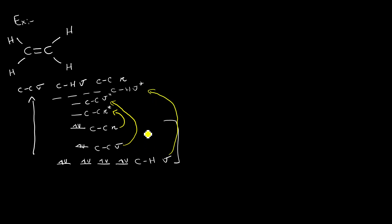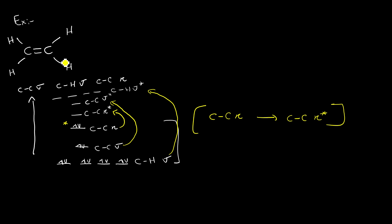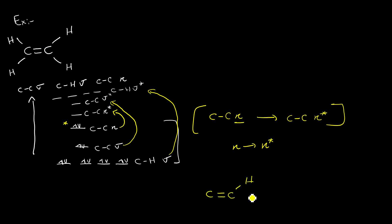However, when it comes to photochemistry, the higher the energy gap, the less feasible that transition is. The lowest energy gap transition is the most likely to occur. In this case, the lowest possible transition is the carbon-carbon pi bond to carbon-carbon pi star. So in this particular molecule, there is a higher probability and higher feasibility for excitation to occur via the pi to pi star transition. That's why in a photochemical reaction involving an alkene, when the reaction happens...